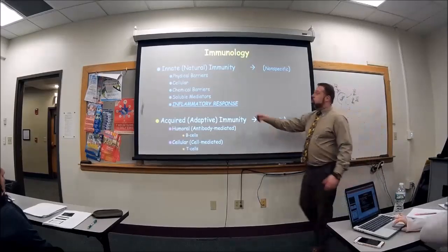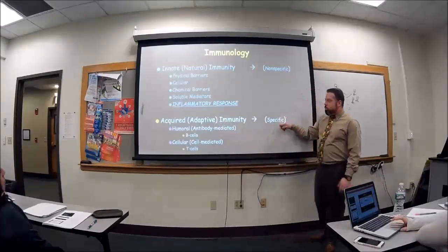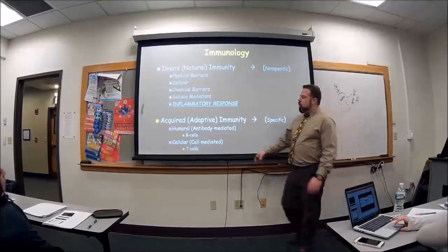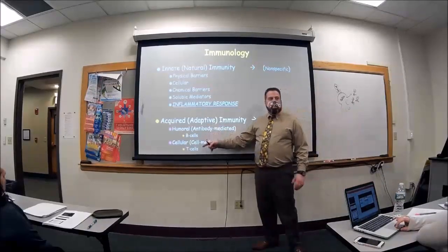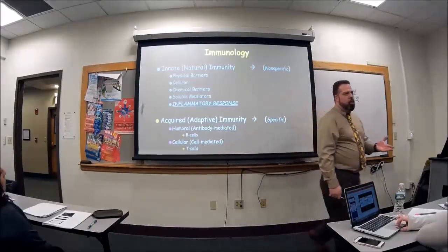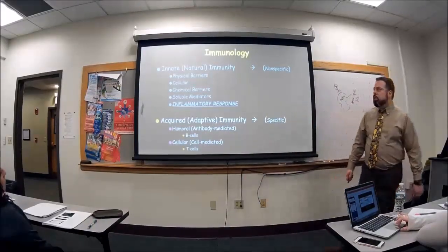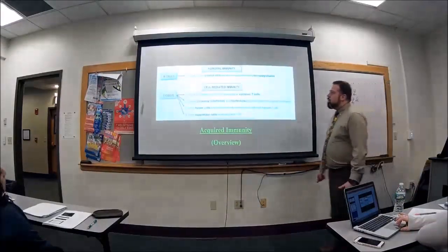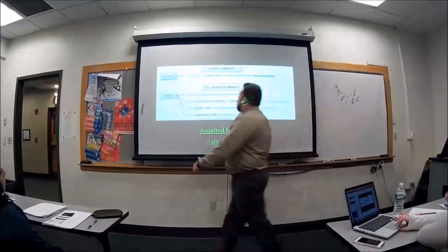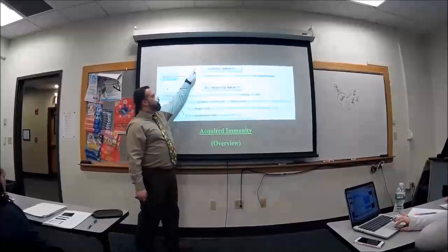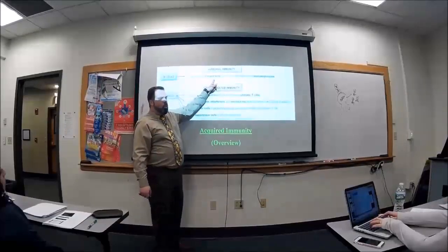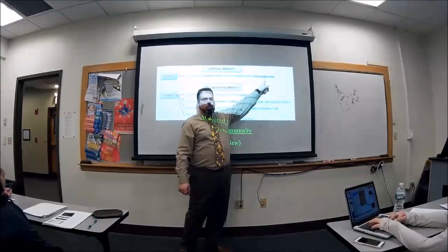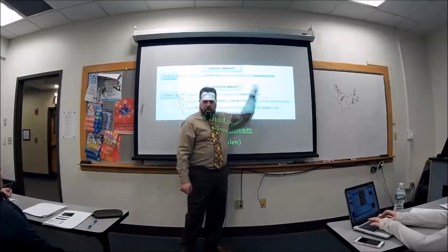You also have the acquired, the adaptive, or the specific immunity. This is basically dealing with the B cells and T cells, and also antibodies, which the B cells produce. The B cells are going to turn into plasma cells, which will turn into immunoglobulins — that's a fancy word for antibodies.